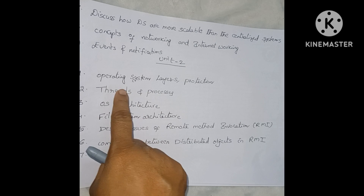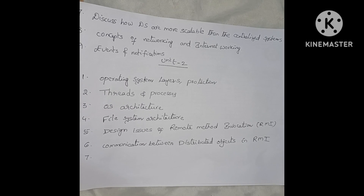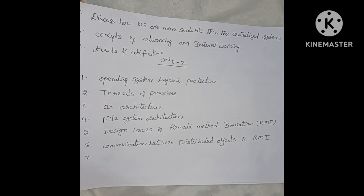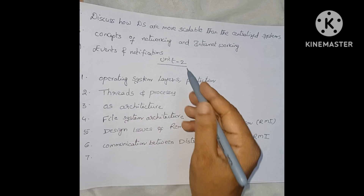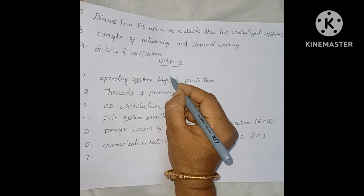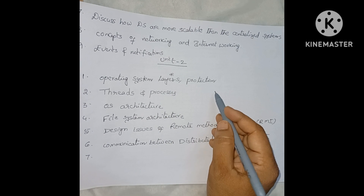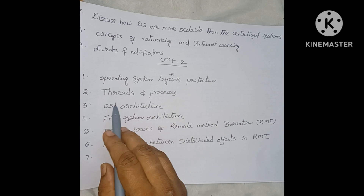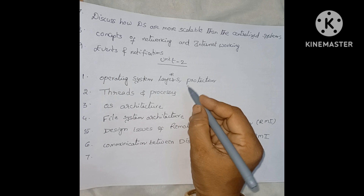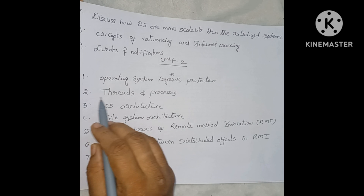Unit 2 important questions are all based on operating system concepts, which we already know. First, operating system layers — a very very important question. Next, protection of operating systems. And threads and processes, including multi-threading — also a very important question.